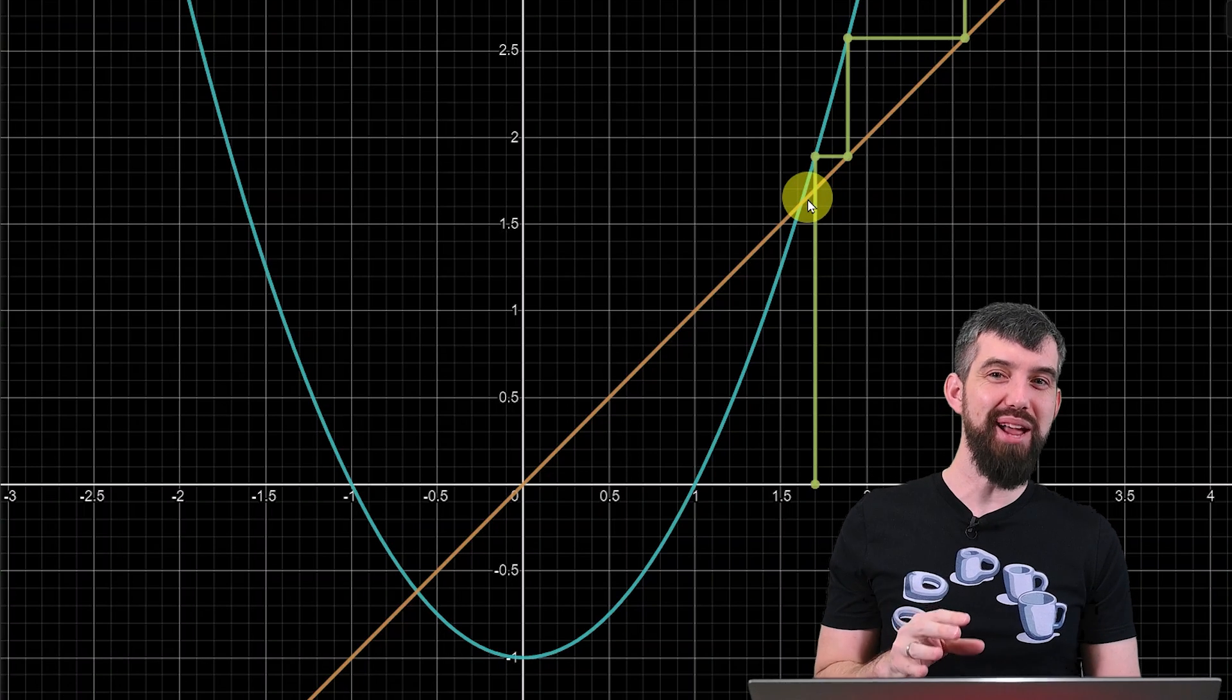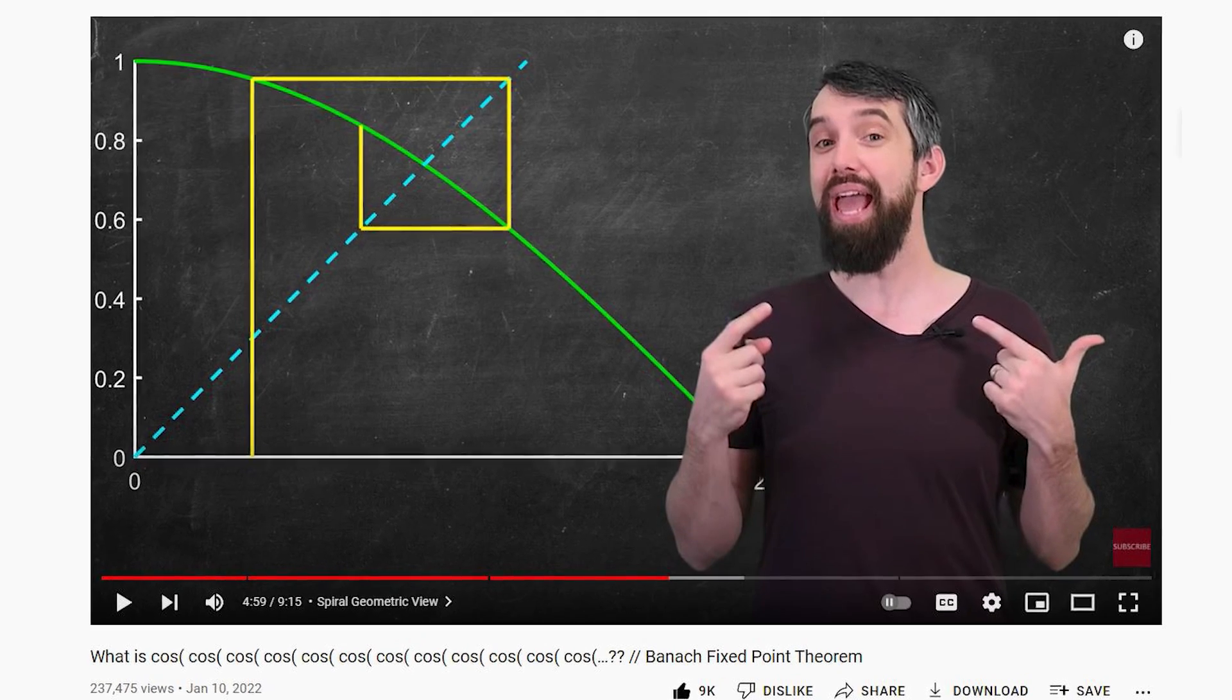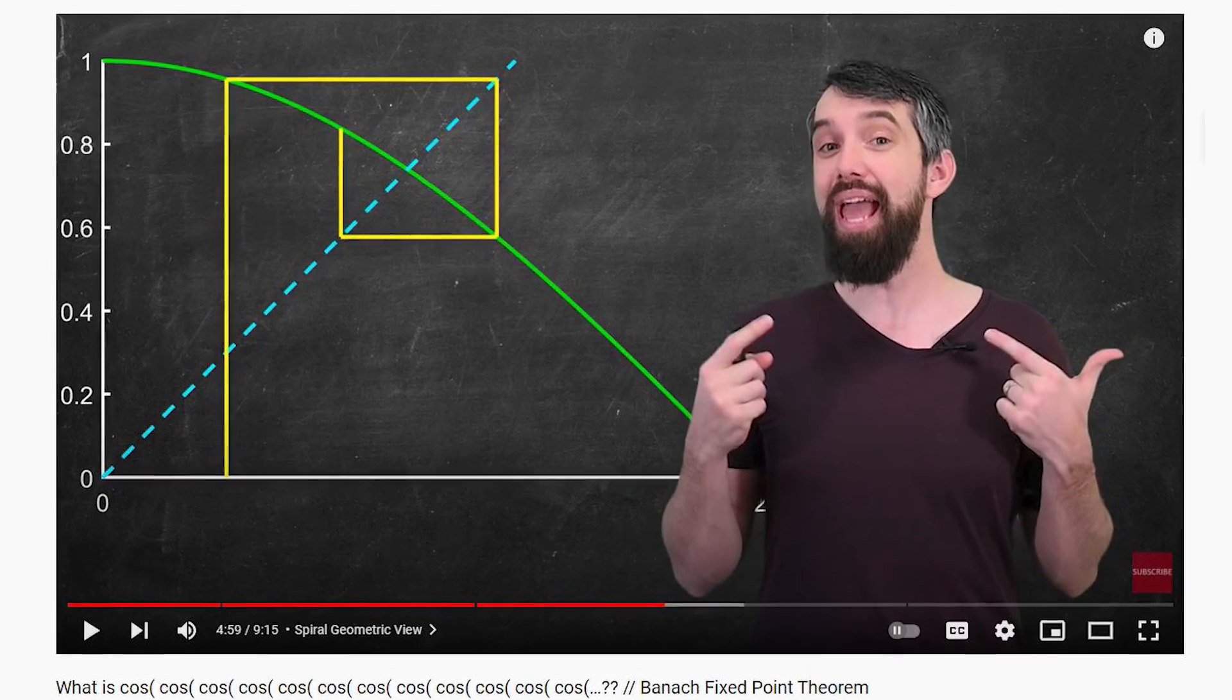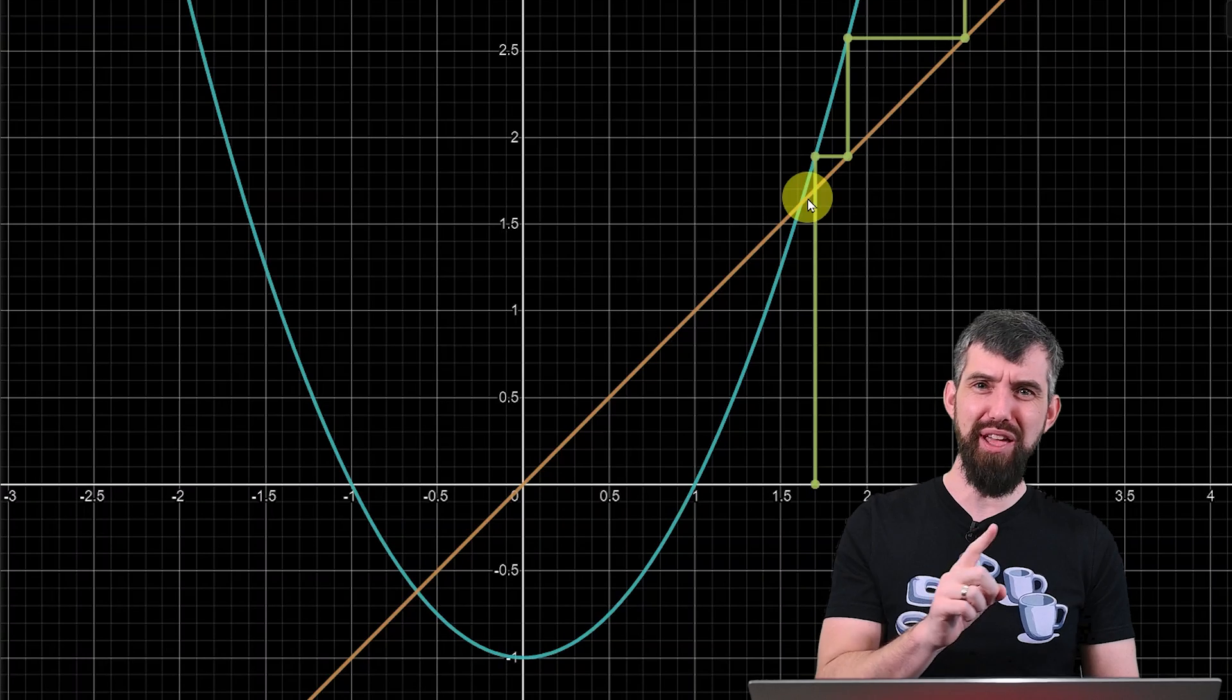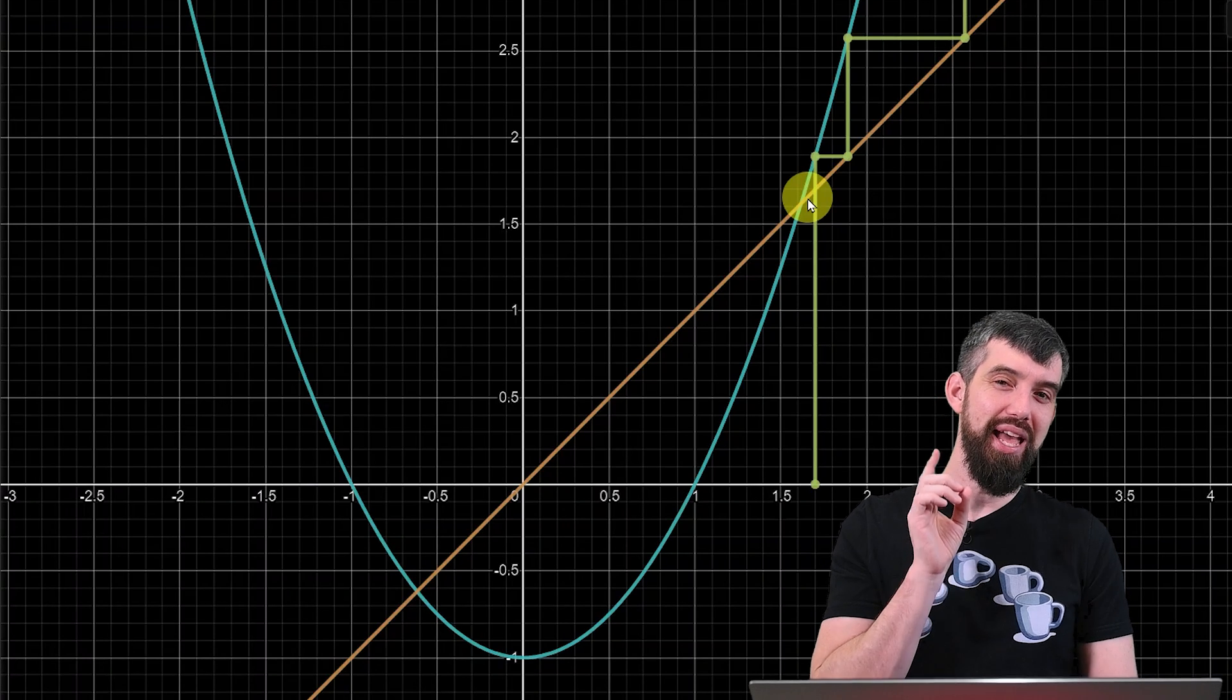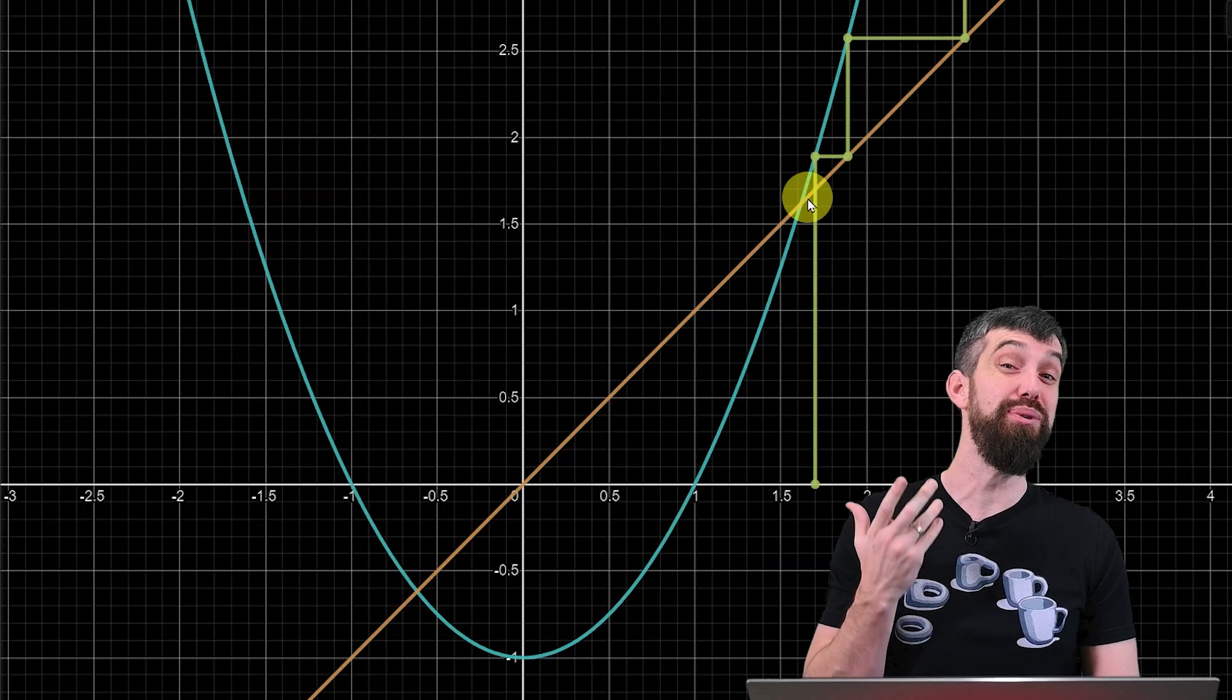Now, I've talked about cobweb diagrams before in my previous sort of fixed point iteration video, cosine of cosine of cosine of cosine, and so forth. Check out that video, it's actually a lot of fun, but in this video, we're going to use some of those same tools.